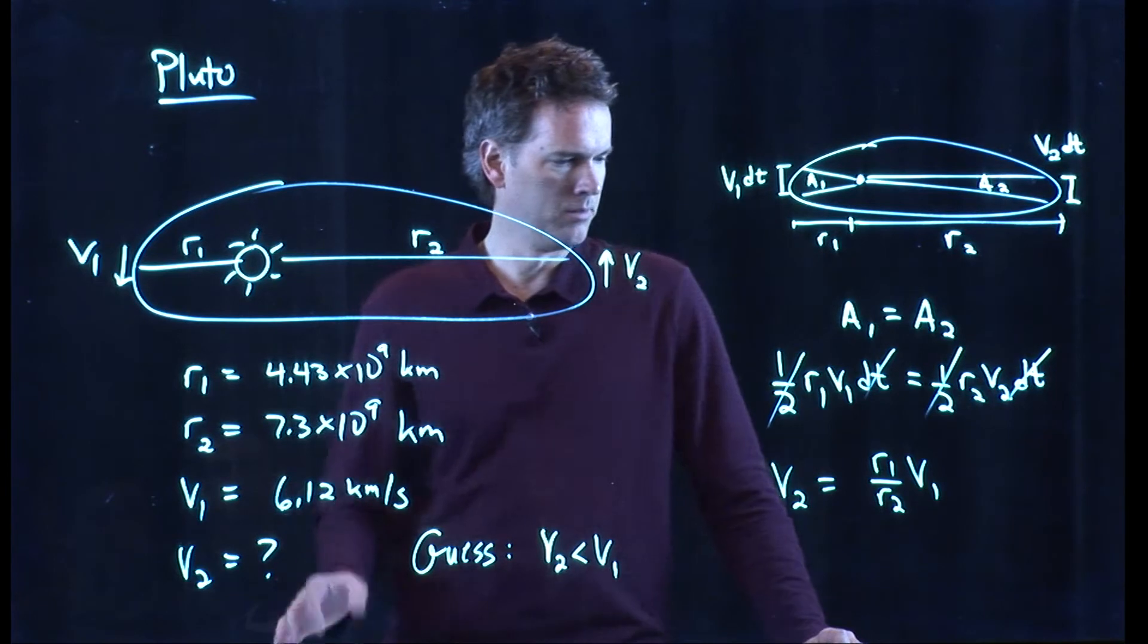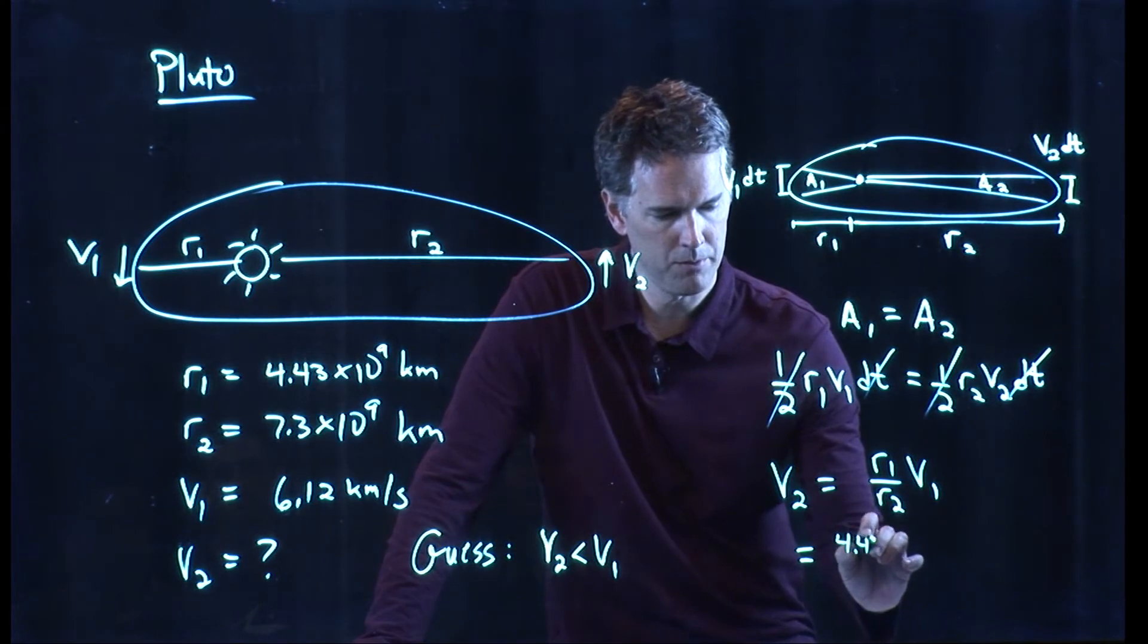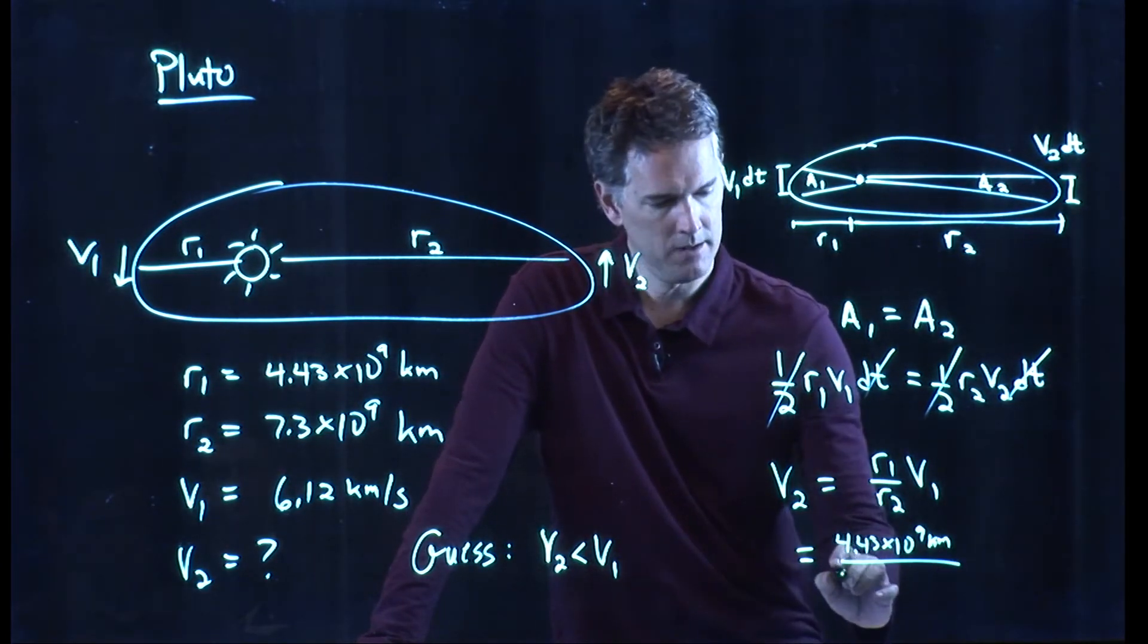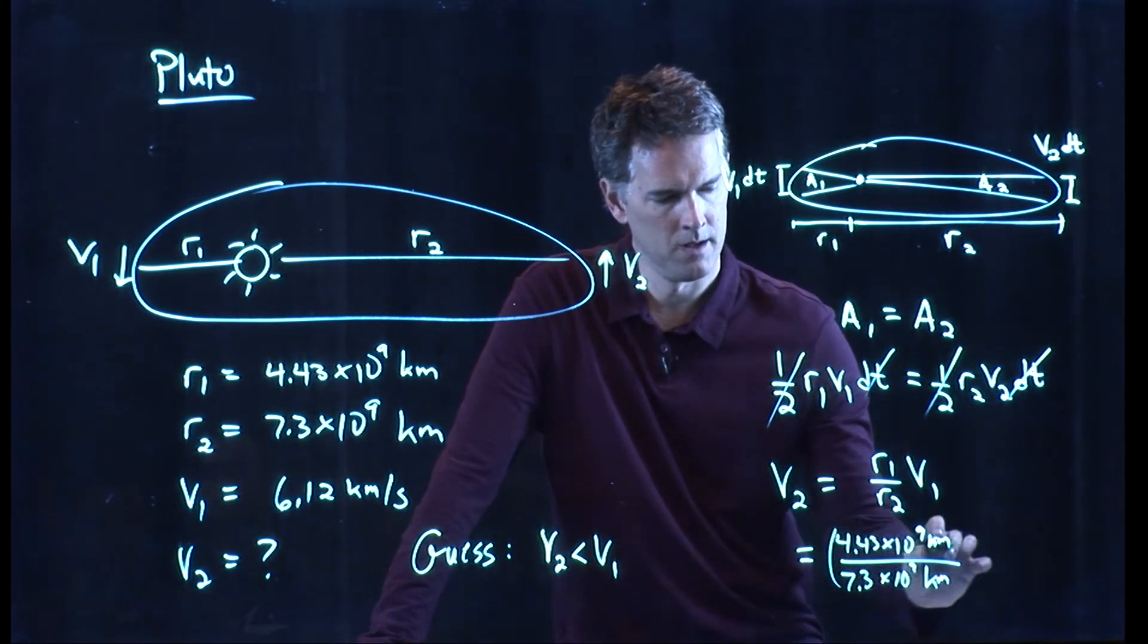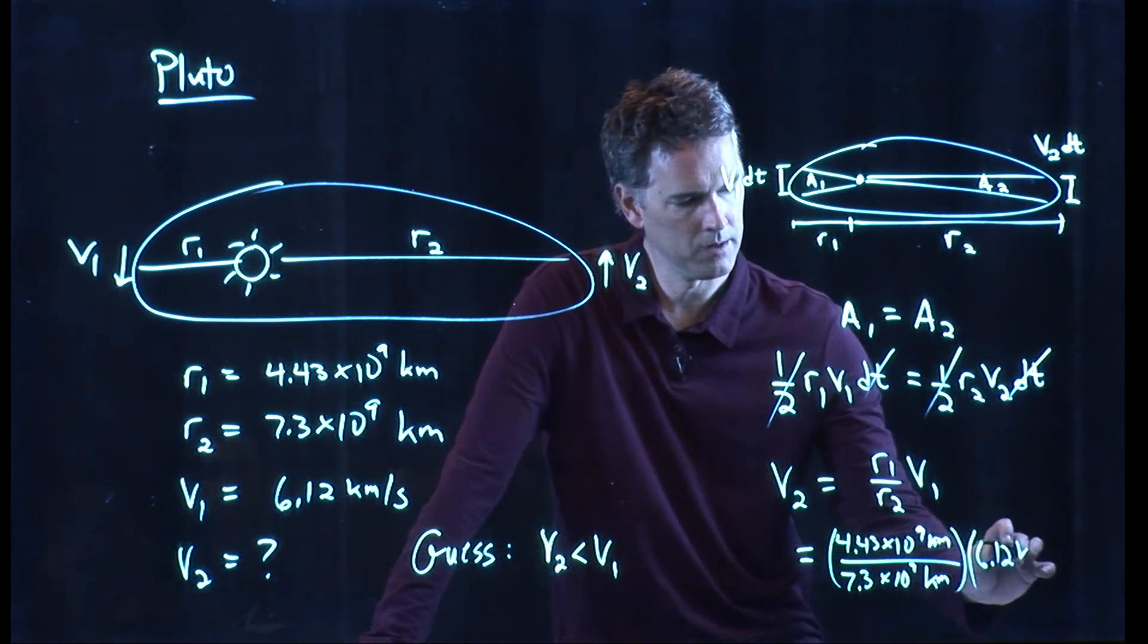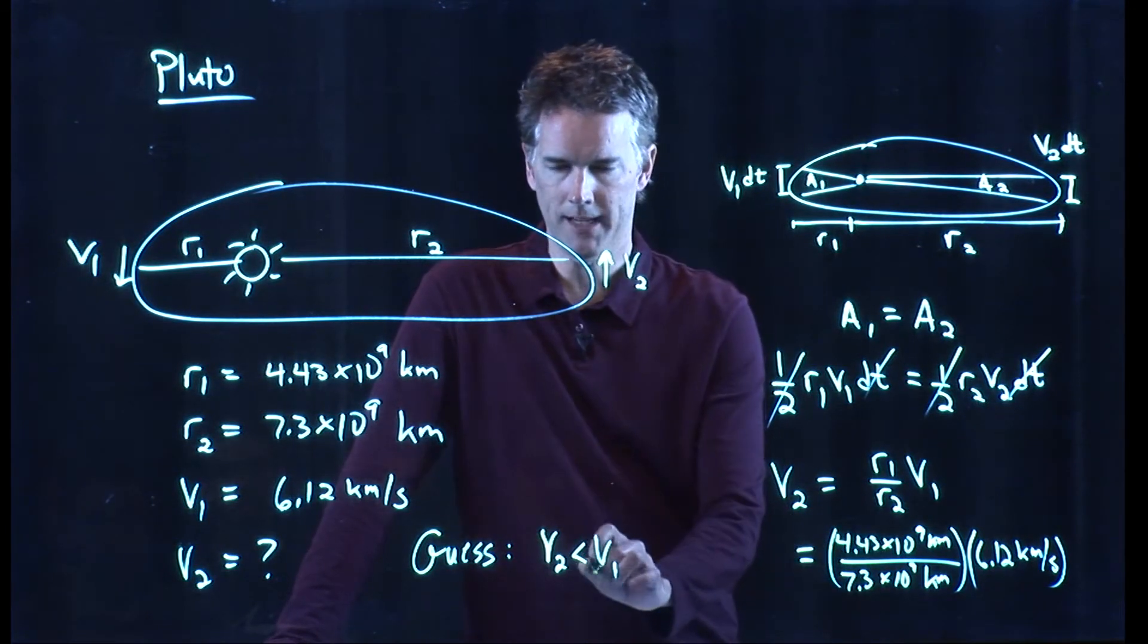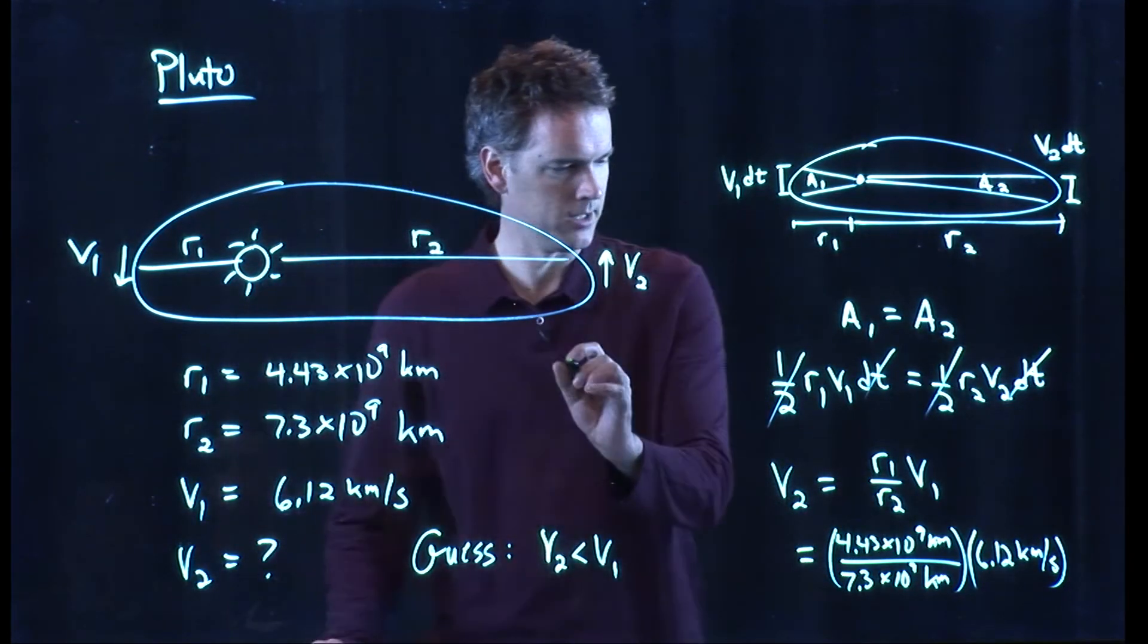And now we have all those numbers. So we can plug it in and try it. R1 is 4.43 times 10 to the 9 kilometers. I'm going to divide by 7.3 times 10 to the 9 kilometers. And I'm going to multiply by V1, which is 6.12 kilometers per second. This number is certainly less than 1. Our guess is going to hold, for sure. What's the actual number? I don't know. Punch it into your calculator and tell me what you get.